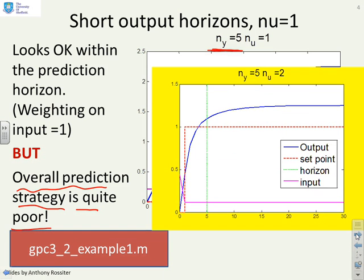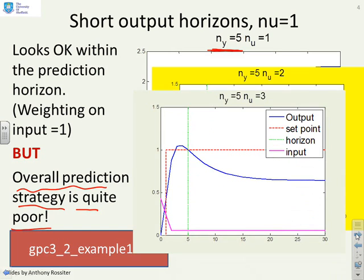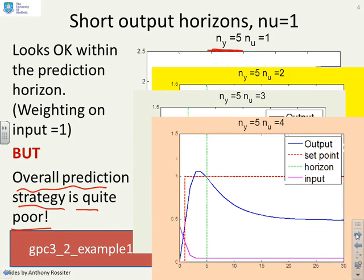What happens then if I increase the control horizon? Well it's slightly better, but again, you can see that the long term prediction is quite poor. If I increase the control horizon again, it's slightly better, but again, the long term is poor. And similarly, if nu goes to 4.